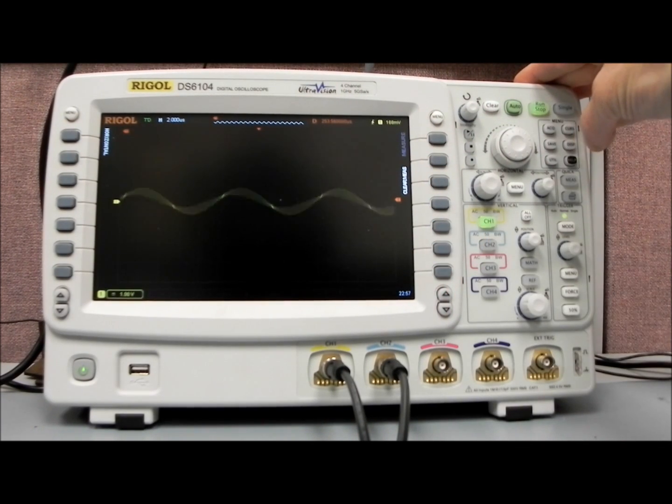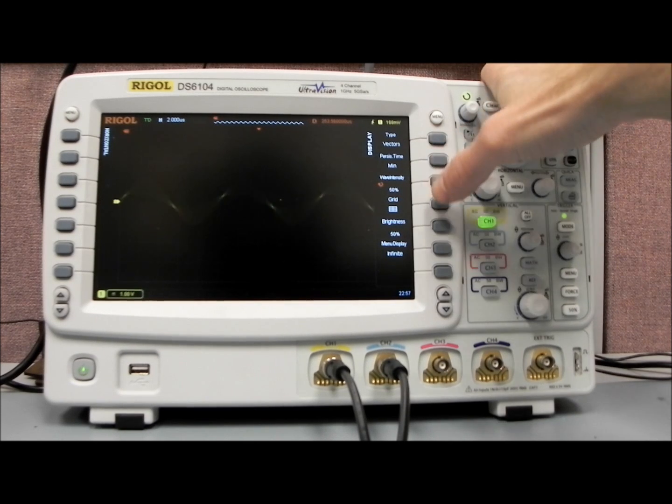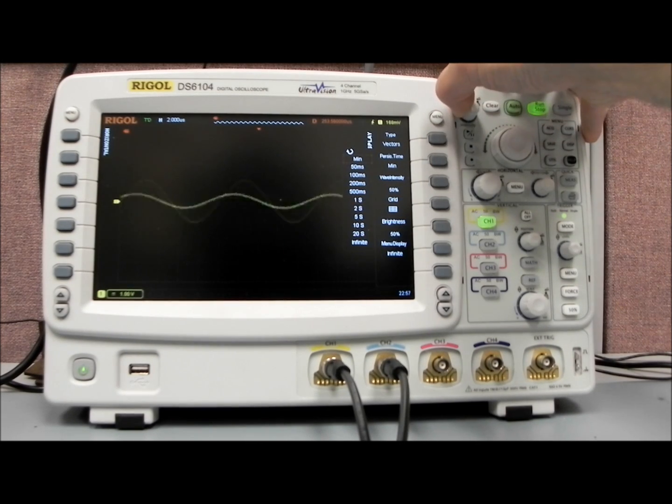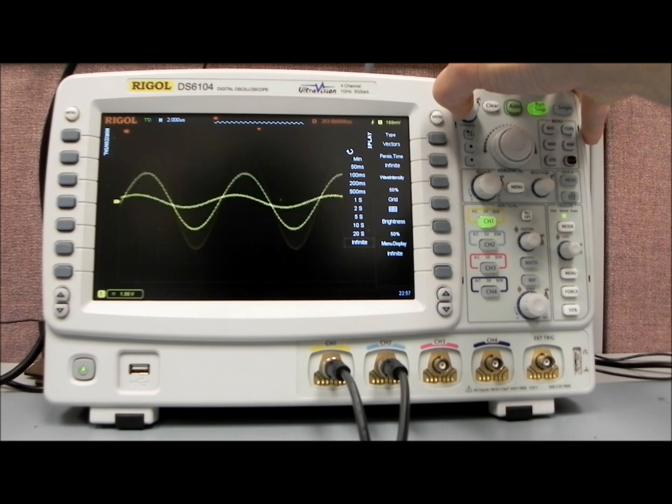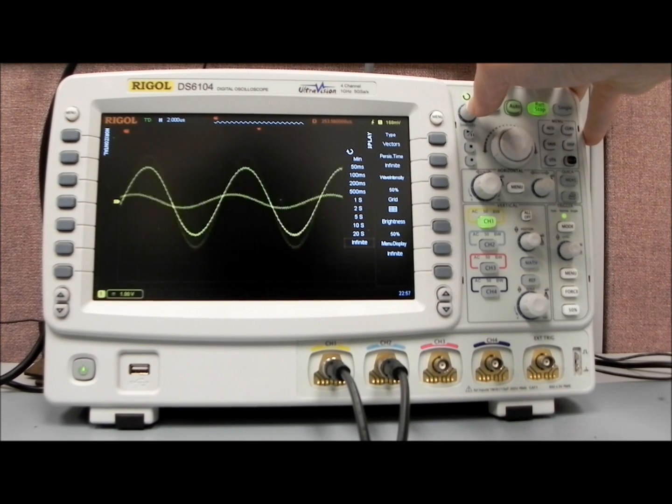What you can do with the scope is with the display button, we can turn the minimum persistence. Persistence is just going to change the amount of time that each of the pixels is going to be lit. If we go to infinite,